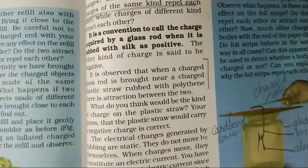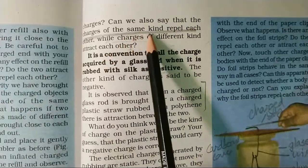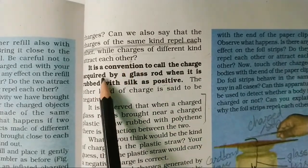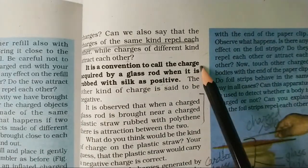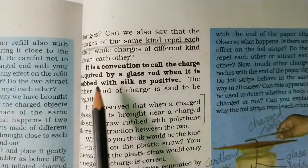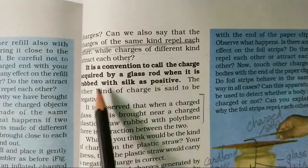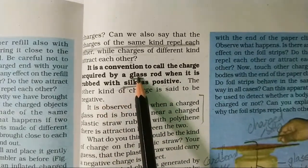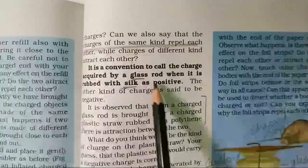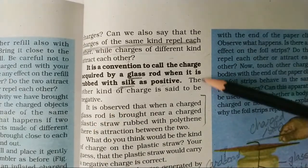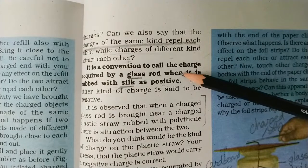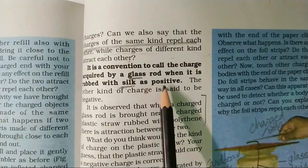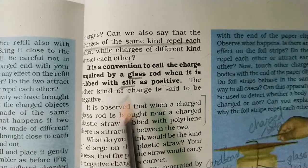This shows that the charge on the balloon is of a different kind from the charge on the refill. Charges of the same kind repel, and charges of different types attract. By convention, the charge acquired by a glass rod when rubbed with silk is called positive, which means the silk acquires a negative charge.